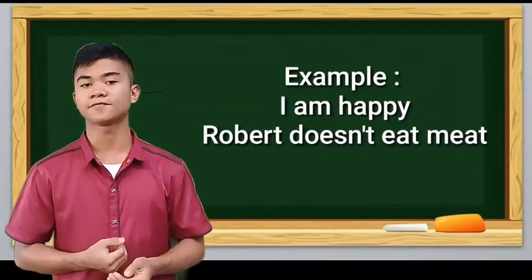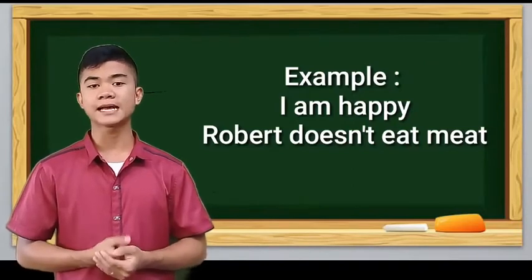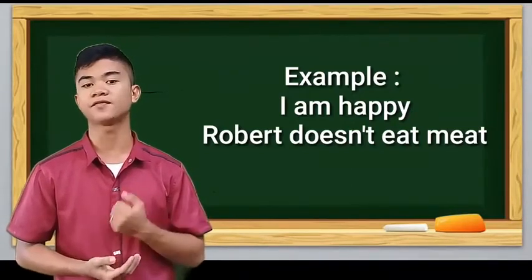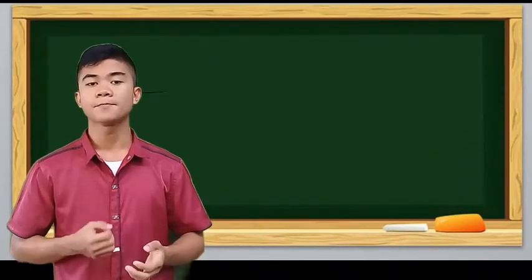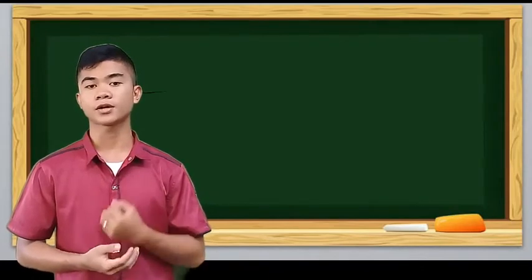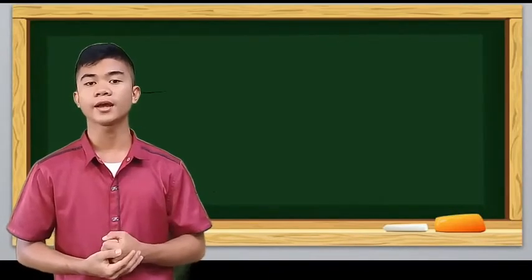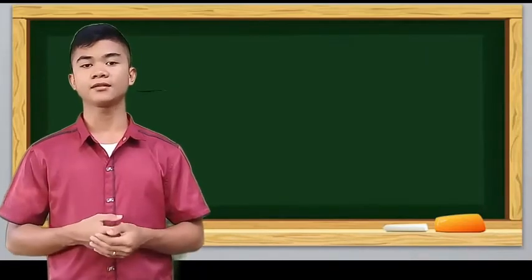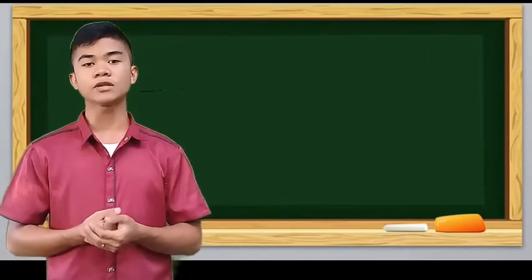I'm is the subject and happy is the verb. Robert doesn't eat meat - Robert is the subject and doesn't eat is the verb phrase. My brother and I went to the mall last night - so my brother and I is the subject and went to the mall last night is the verb phrase. And the last example is: This is a new laptop computer, has already crashed twice.